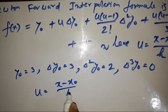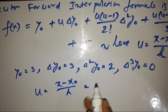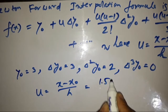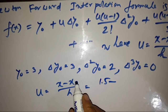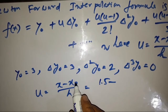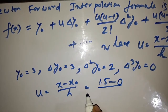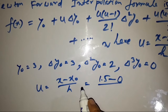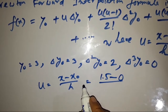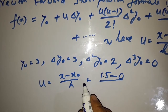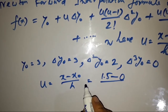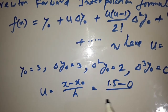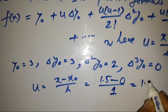Here u = (x − x₀) / h. The value of x we want is 1.5, x₀ is the first value in the X column which is 0, and h is the gap between two consecutive X values. The gap between 0 and 1, 1 and 2, 2 and 3, and 3 and 4 is all 1, so h = 1. Therefore u = (1.5 − 0) / 1 = 1.5.